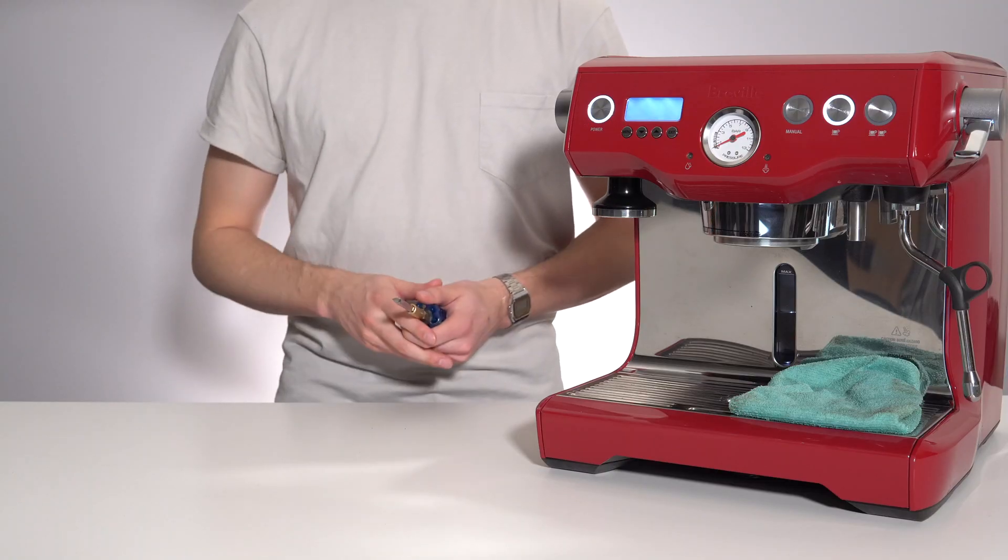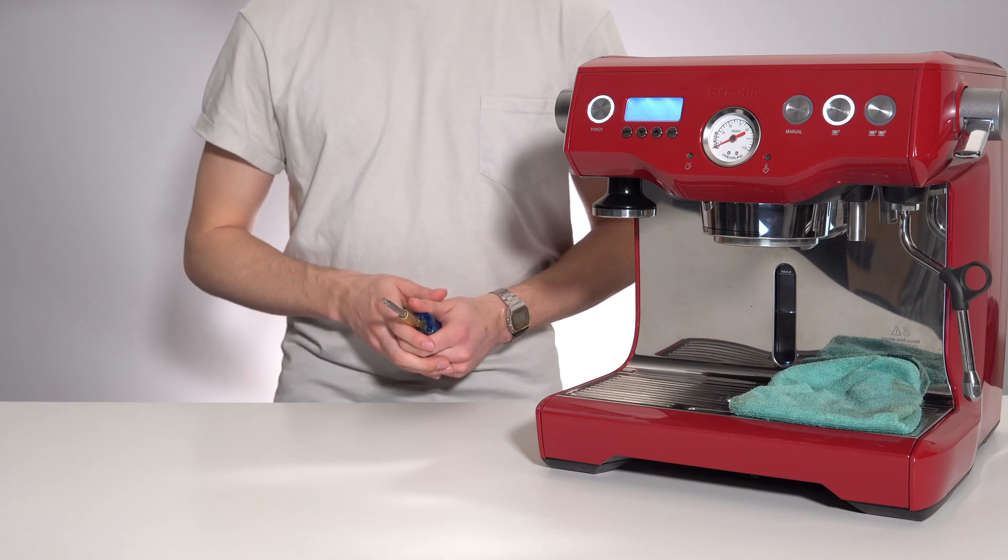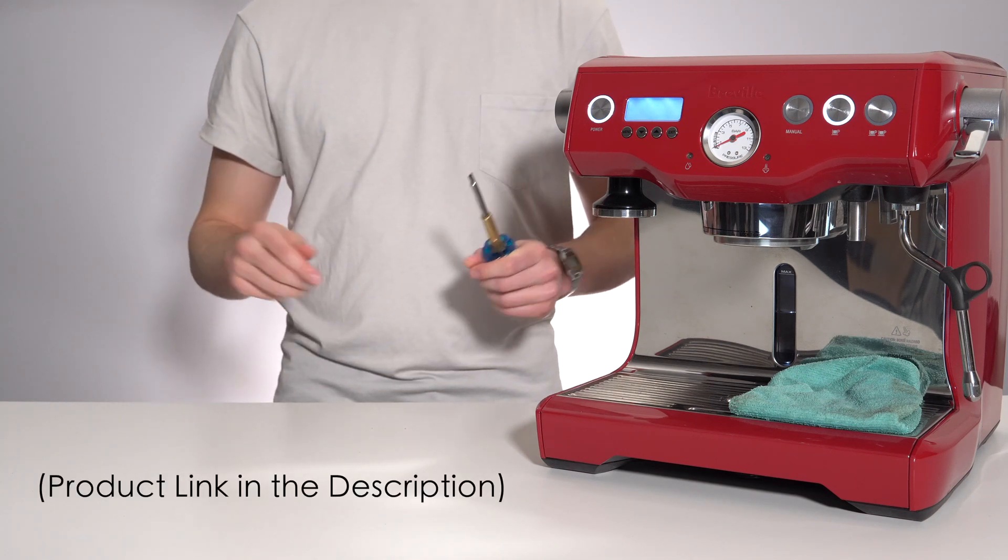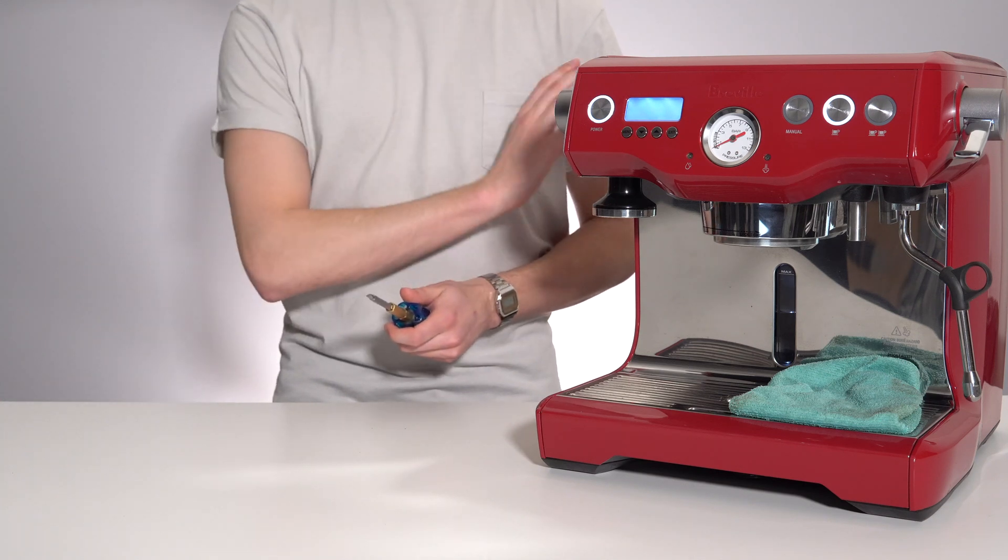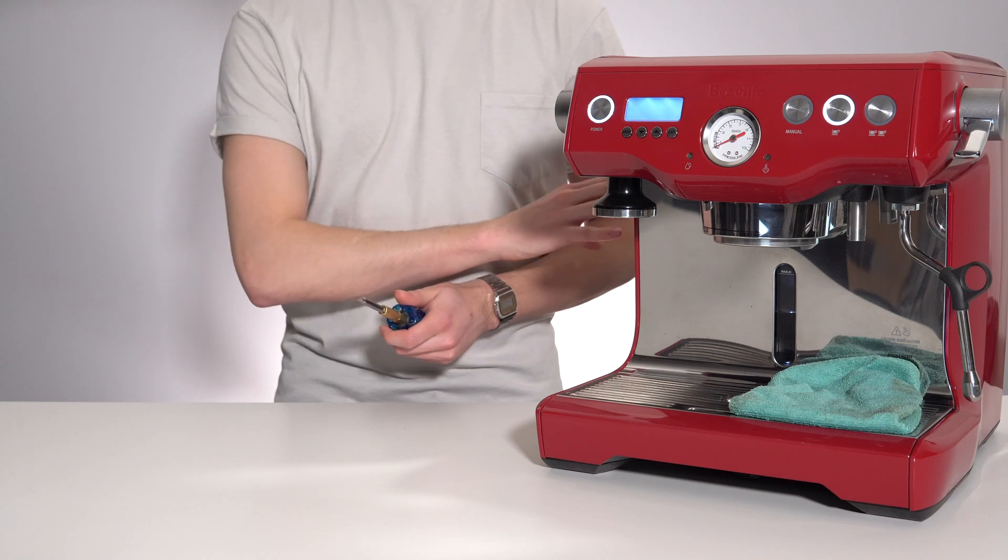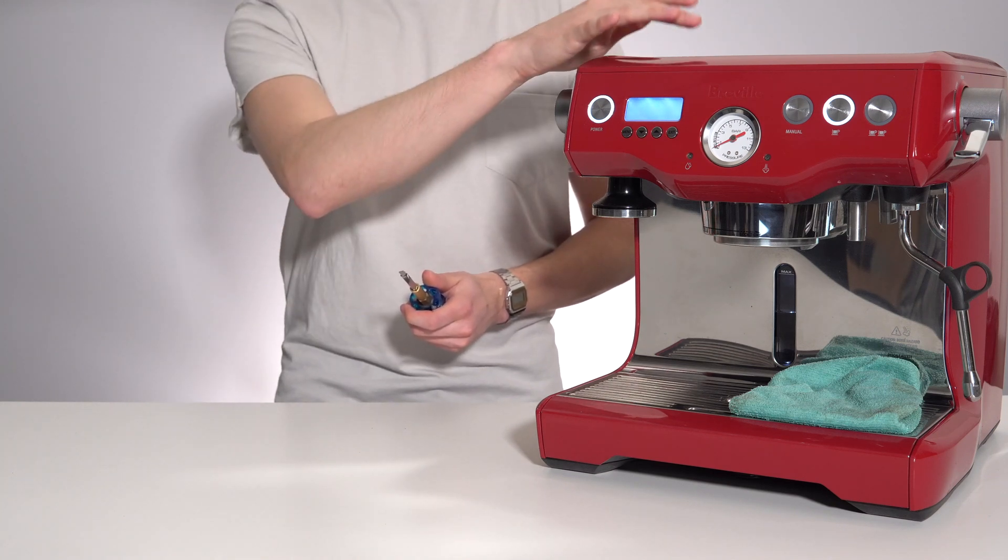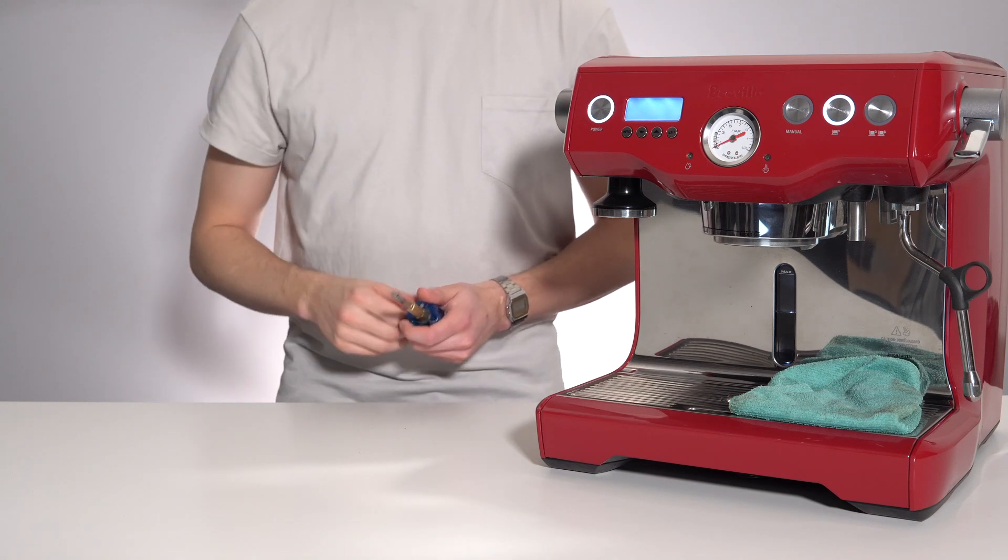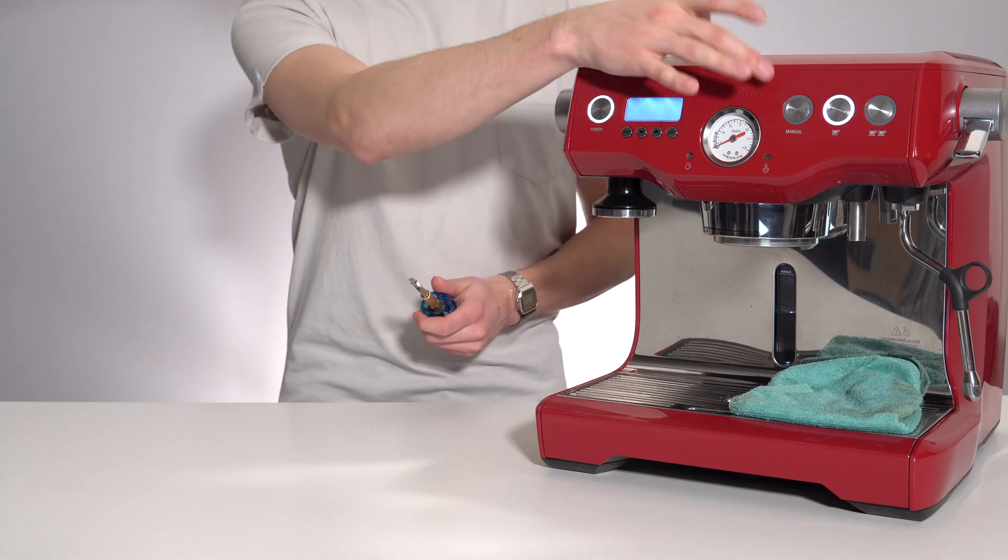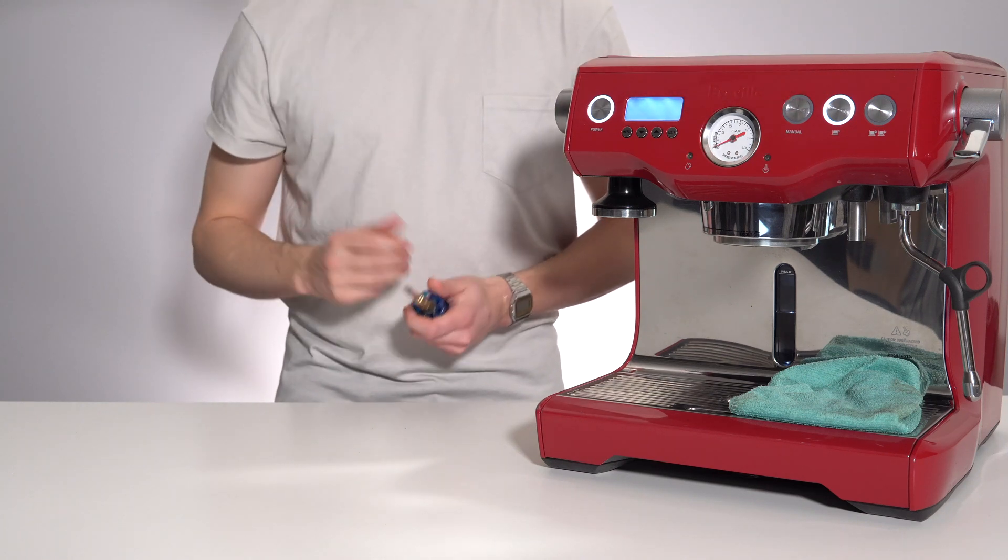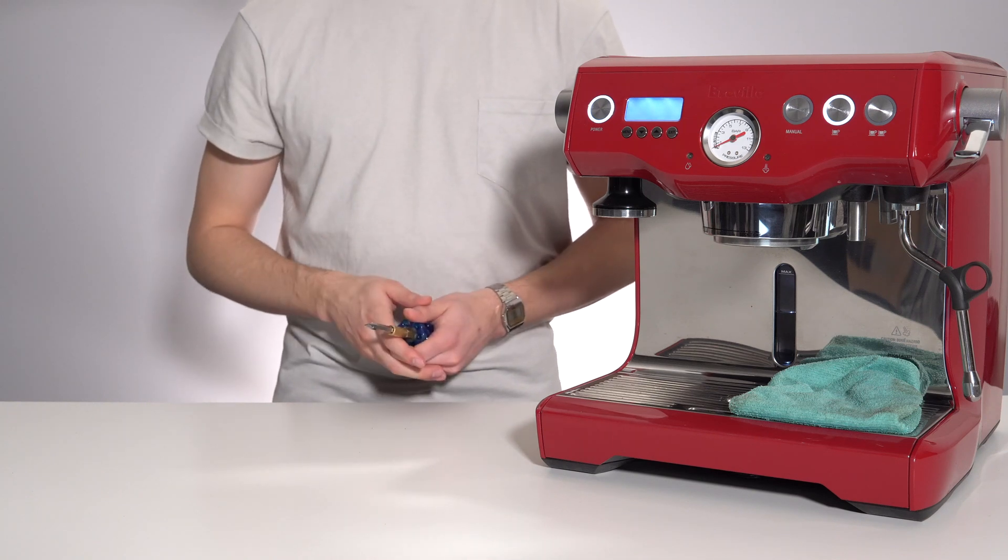Breville sells its own branded Breville descaling solution, but you can also save some money by going with a third party. I will leave a link to the one that I use in the description below. Regardless of which route you go, fill your water tank using your descaling solution. I recommend doing this from the back of the machine, as if you use the front port, you will have to rinse this out later on. Once your water tank has been filled with a descaling solution, press the illuminated button on your machine. Once this button is pressed, you will enter a 20 minute descaling mode. Wait for that to complete.